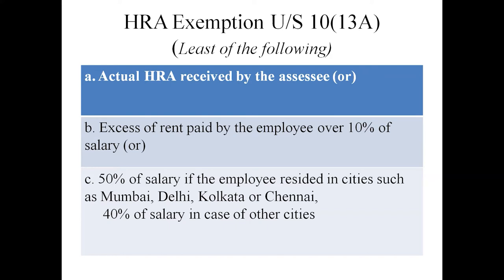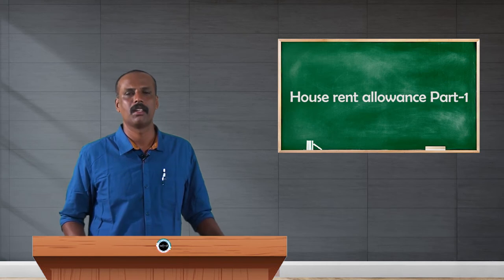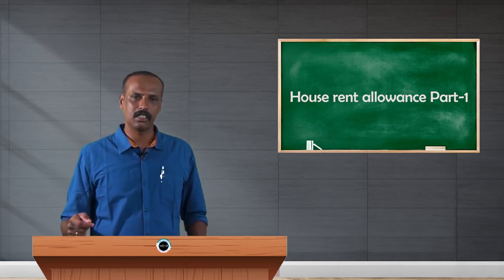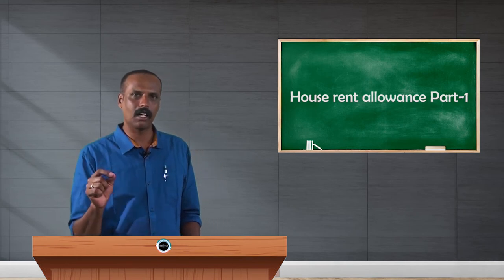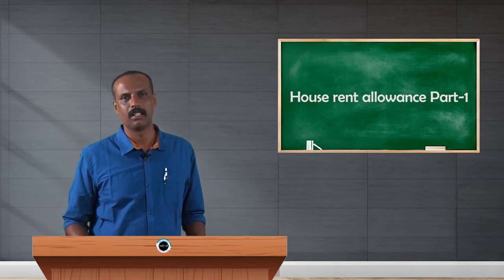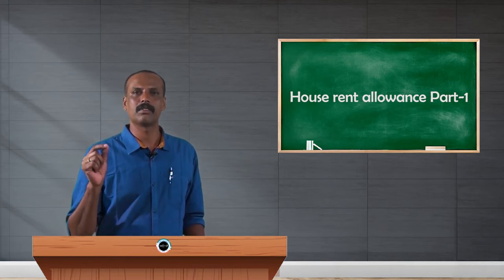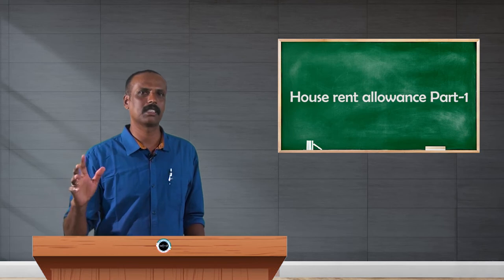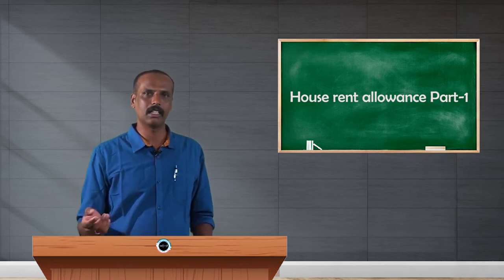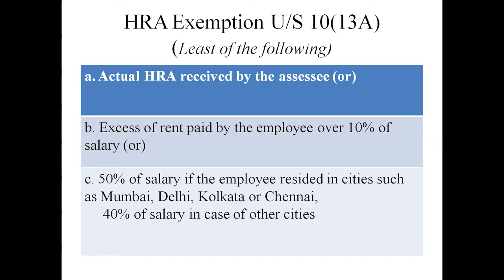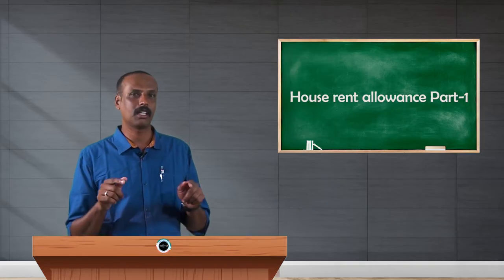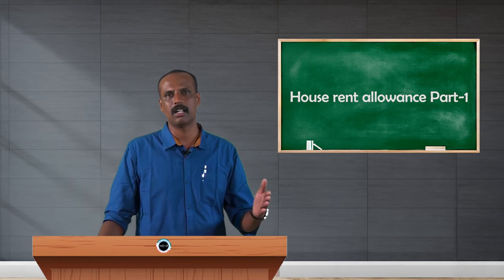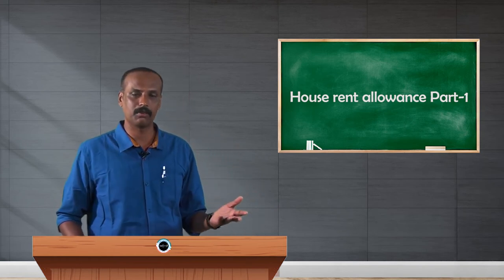The second amount is the excess of rent paid by the employee over 10 percent of his salary during the previous year. This second point is very important — at the time of residing in a rented house, the employee pays rent, and we calculate how much rent paid is in excess of 10 percent of salary. The third one is 50 percent of salary or 40 percent of salary, and there are two categories here.